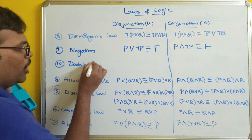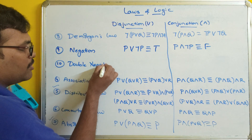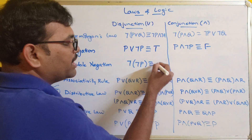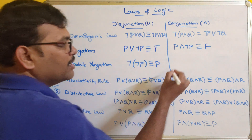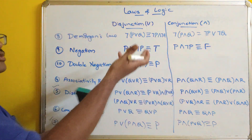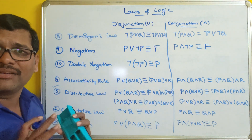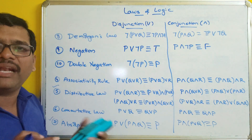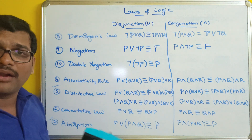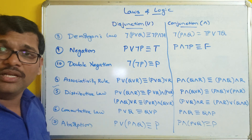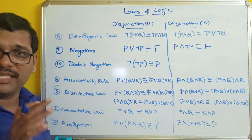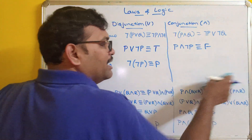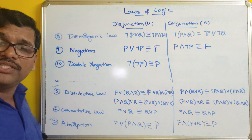The tenth law is double negation: ¬¬p ≡ p. There is no question of disjunction or conjunction here — applying negation twice to any proposition, simple or compound, returns the original proposition.